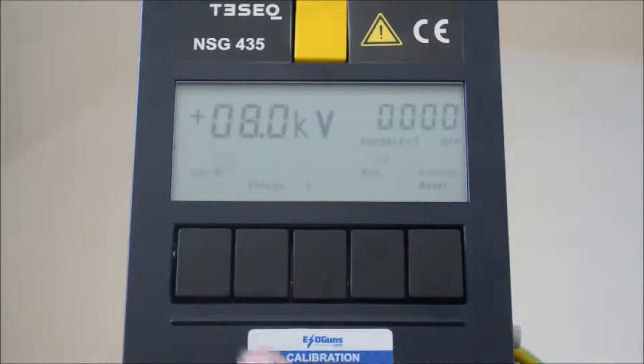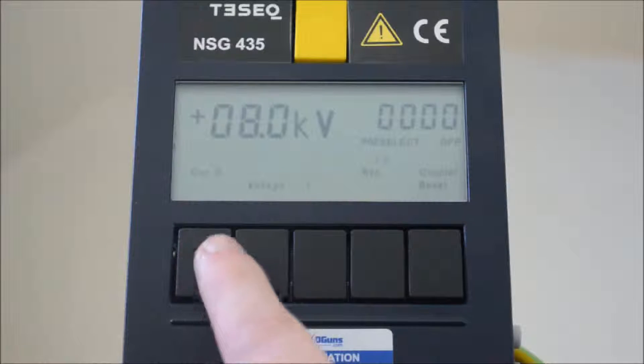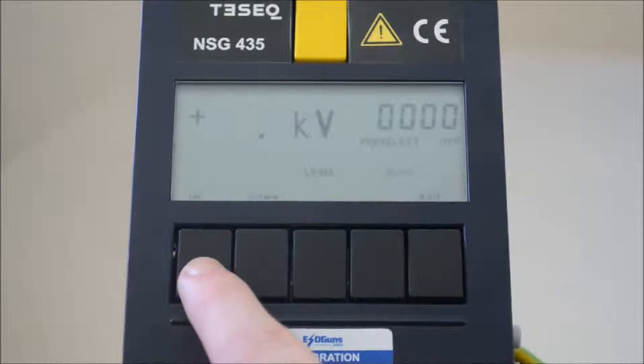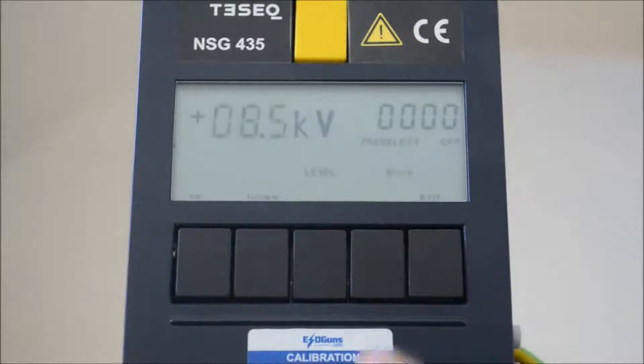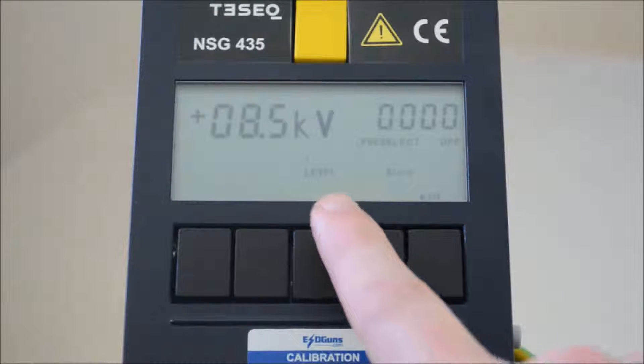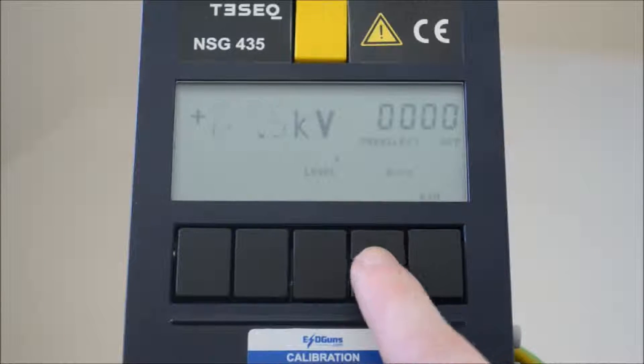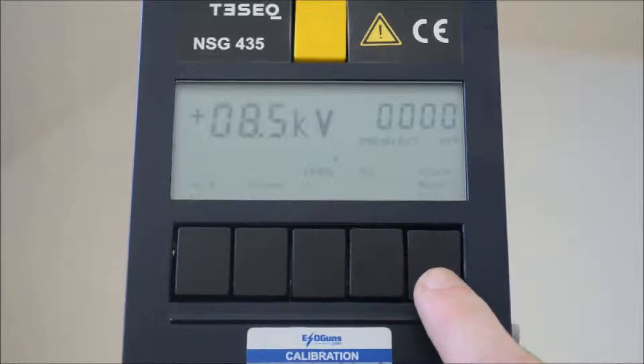Last but not least, let's save a test parameter for regular use. Air discharge for example, 8500 volts. Staying in the voltage menu we press F4 to store the setting. Using F3 we scroll through the pre-programmed IEC levels and select a memory location. We press F4 once again to assign the current value in the simulator to the IEC level 4 air discharge memory location.